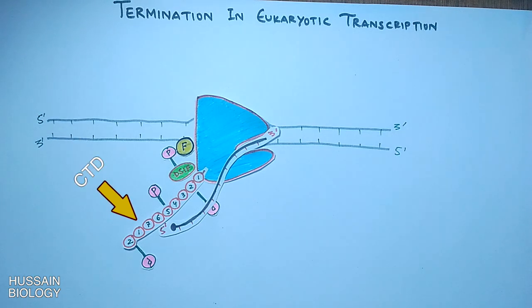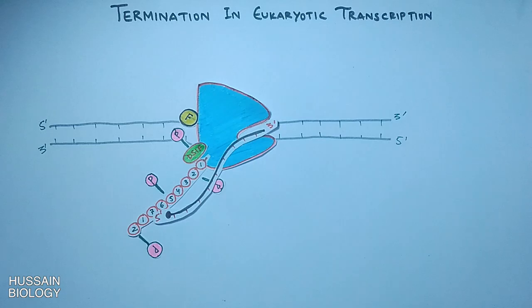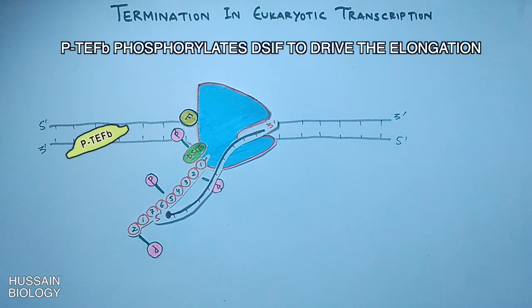The CTD of RNA polymerase II is phosphorylated at serine 2 and serine 5 during the elongation process. Also, DSIF factor is phosphorylated during elongation. Remember, the phosphorylation of DSIF is done by the active P-TEFb factor.